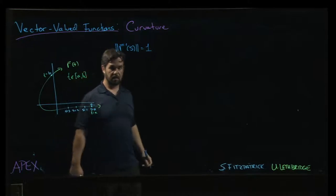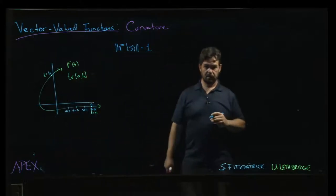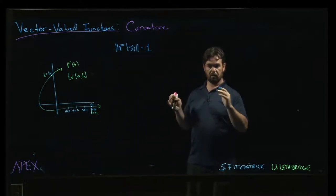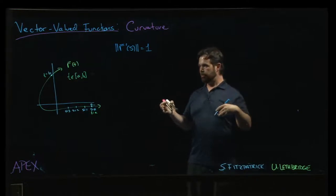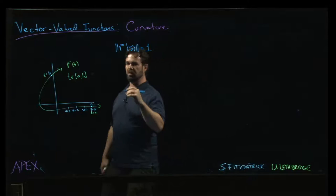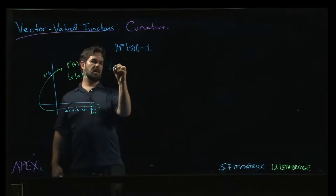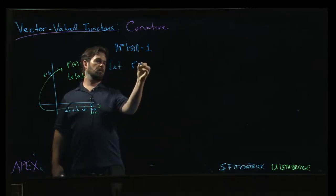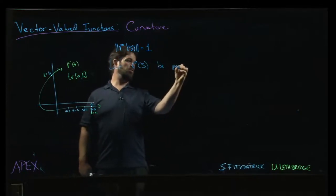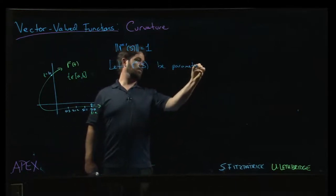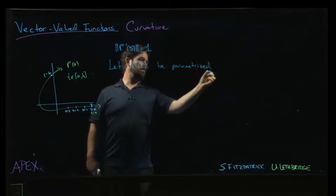Then the derivative of our vector valued function will have magnitude one. So speed is one. The assumption here is going to be that we have a vector valued function, and we're going to assume it's parametrized by arc length.